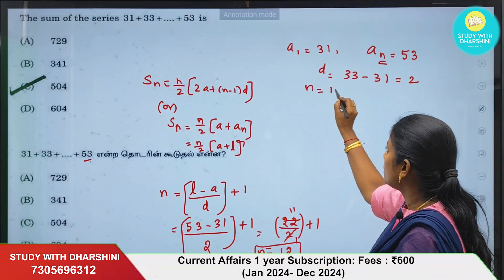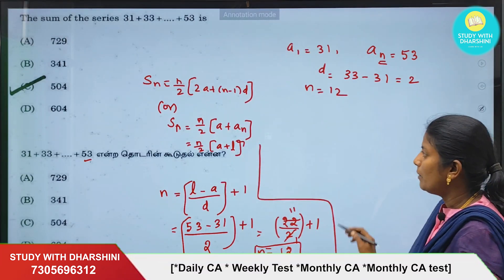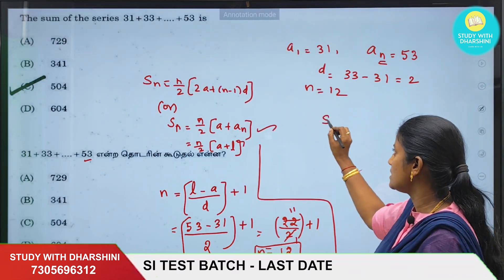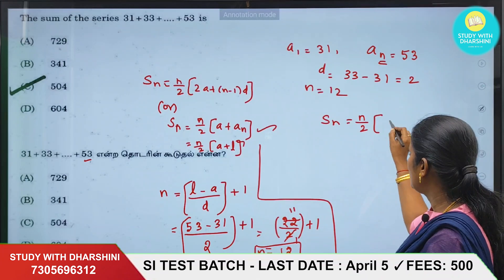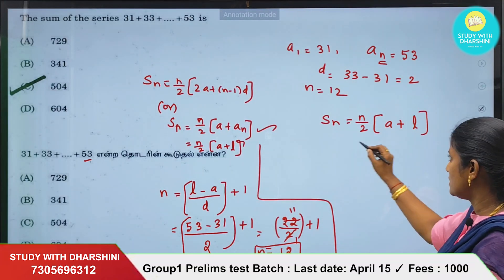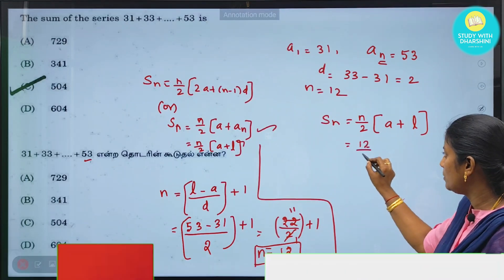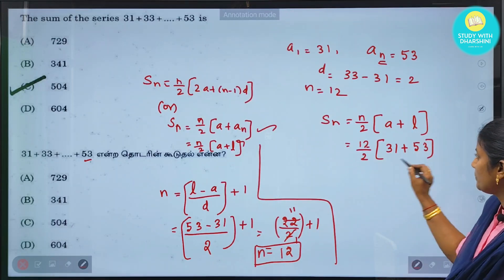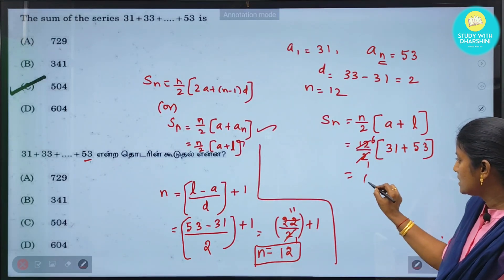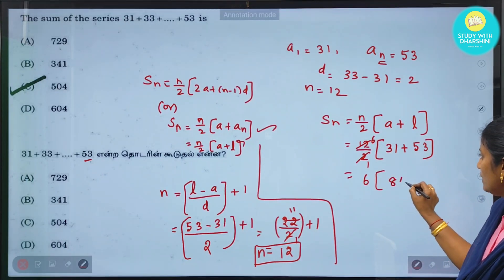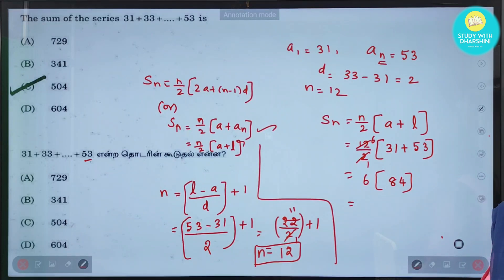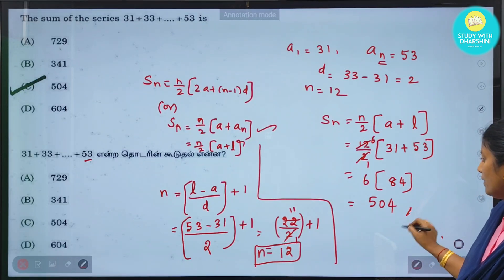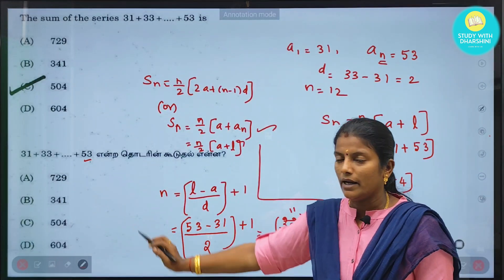Now applying the formula: SN = n/2 × (a + an) = 12/2 × (31 + 53) = 6 × 84 = 504. So option C, 504, is the answer.